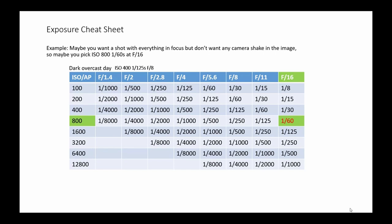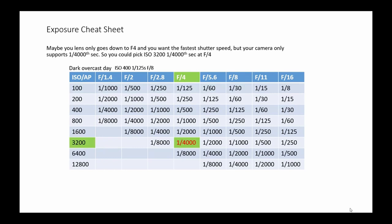Maybe you want the best quality image possible, so you pick ISO 100 and f8, and this gives you a shutter speed of 1/30th of a second.